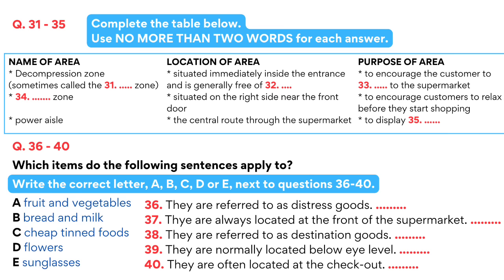This is where the customers recover from the environment outside — this is where they adjust. For example, the place where they might put their keys in their pockets or take off their sunglasses. So, what do you notice about this area? It's very empty, isn't it? Yes, it's pretty much clear of stock altogether. This area is not designed or used to sell us anything. The supermarkets never put any merchandise here because they know that no one's ready to buy yet. However, the retailers want their customers to feel comfortable. If they're in a relaxed state of mind, they're much more likely to stay longer and spend money.